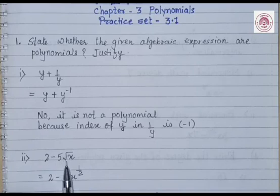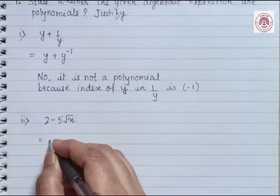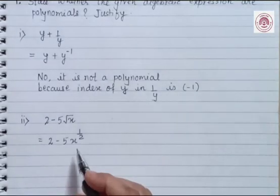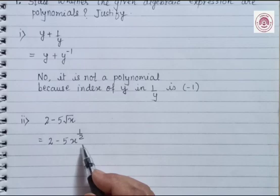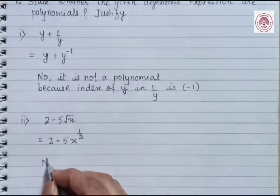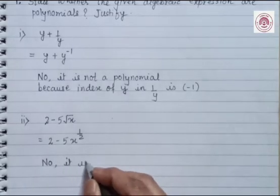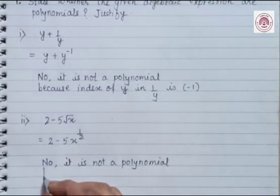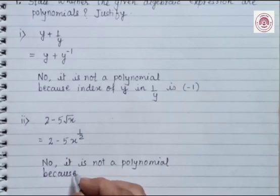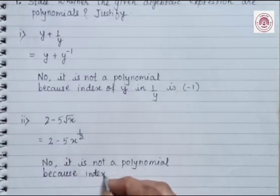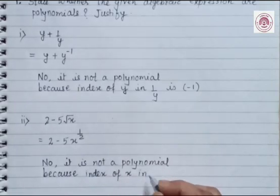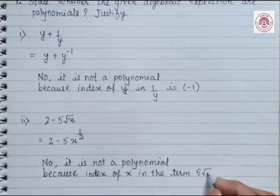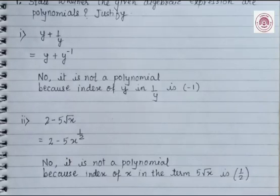Question 2 is 2 minus 5 root x, which equals 2 minus 5 times x raised to power 1 by 2. Here again the index of x is 1 by 2, which is not a whole number. Therefore, it is not a polynomial because the index of x in the term 5 root x is not a whole number.